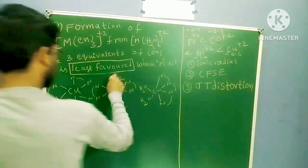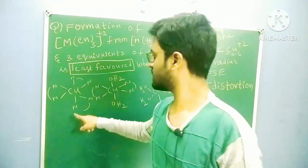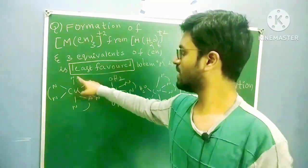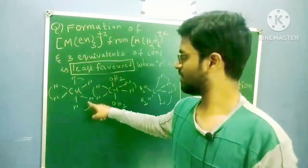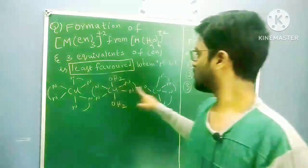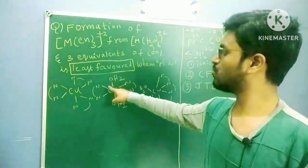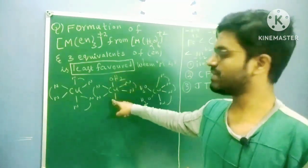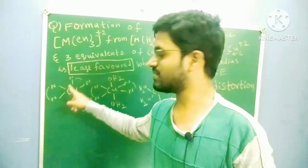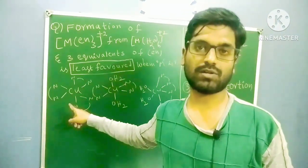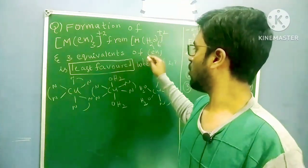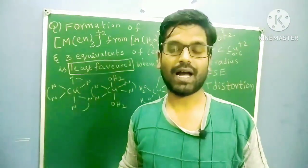The trans isomer is more stable because in the cis form, Jahn-Teller distortion causes very high ring strain. Because of the chelate rings and Jahn-Teller distortion, the cis complex is less stable. Comparatively, the trans isomer is very much more stable. This is the very best application of Jahn-Teller distortion — and this is the reason why copper is the correct option.